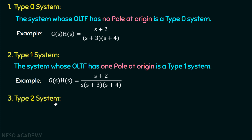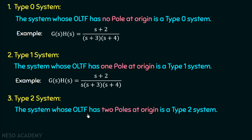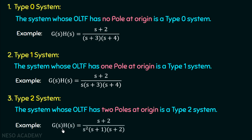The third one is the type 2 system. The system whose open loop transfer function has two poles at origin is a type 2 system. For example, if G(s)H(s) = (s+2) / [s²(s+1)(s+2)], this transfer function has four poles, two of which are at the origin, so the type is 2. In general, if the open loop transfer function has n poles at the origin, the type of that system is n — a type n system.